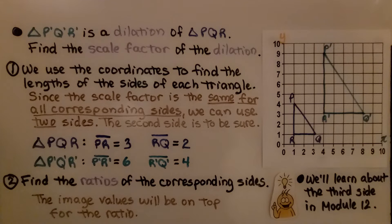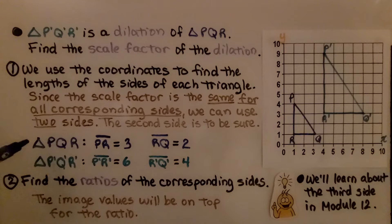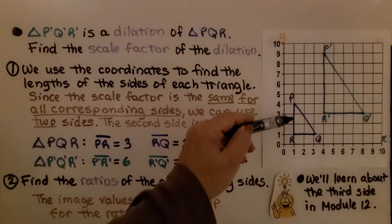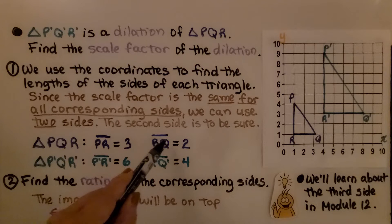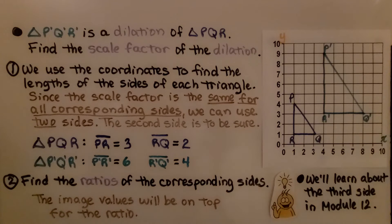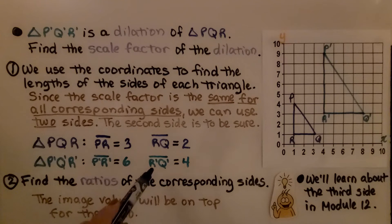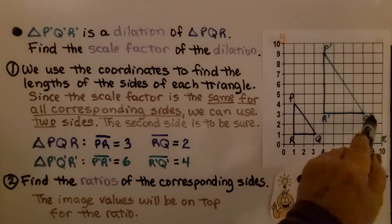The first thing we do is use the coordinates to find the lengths of the sides of each triangle. Since the scale factor is the same for all corresponding sides, we can use 2 sides — we really need one, but the second is to be sure. Triangle PQR has segment PR equal to 3, and segment RQ equal to 2. Triangle P'Q'R' has segment P'R' equal to 6, and segment R'Q' equal to 4.